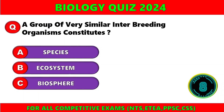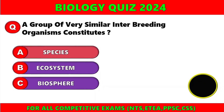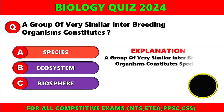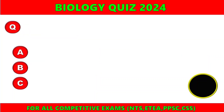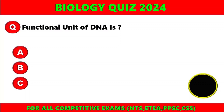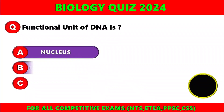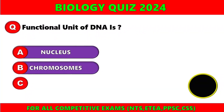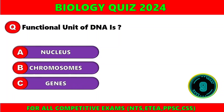A group of very similar interbreeding organisms constitutes a) species, b) ecosystem, c) biosphere. The right option is A — species. A group of very similar interbreeding organisms constitutes a species.